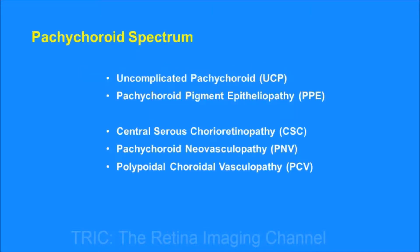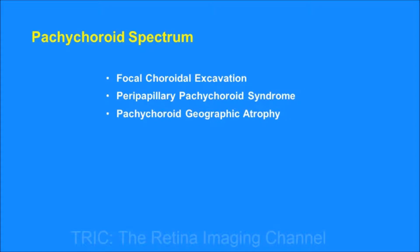The pachychoroid spectrum includes various entities, starting from uncomplicated pachychoroid to pachychoroid pigment epitheliopathy, central serous chorioretinopathy, pachychoroid neovasculopathy, and polypodial choroidal vasculopathy. Newer entities like focal choroidal excavation, peripapillary pachychoroid syndrome, and pachychoroid geographic atrophy have also been added.